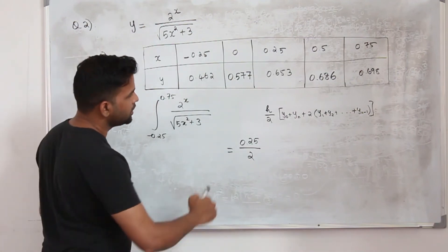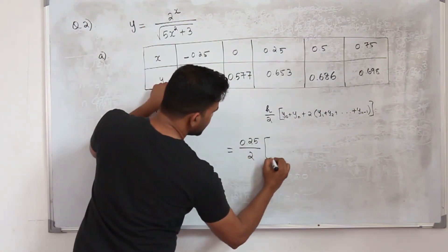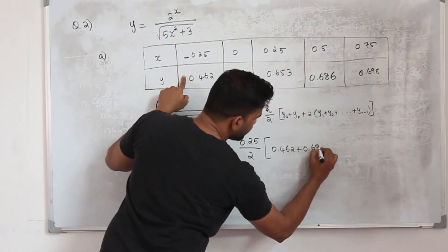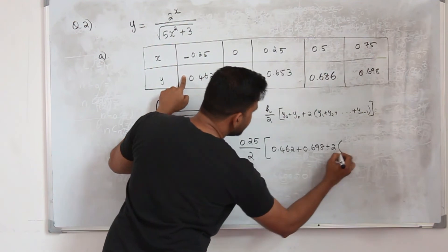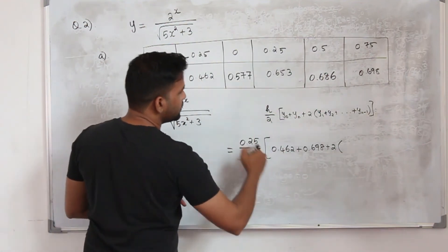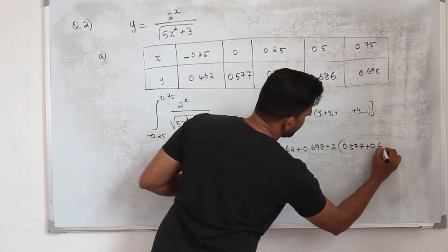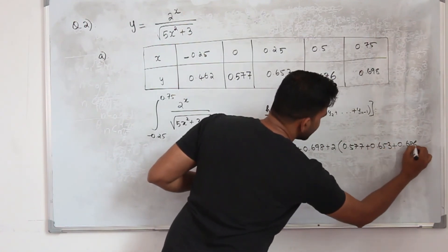Into y0 is the first term, 0.462. yn is the last term. Plus 2 times sum of the rest of the terms: 0.577, 0.653, 0.686.